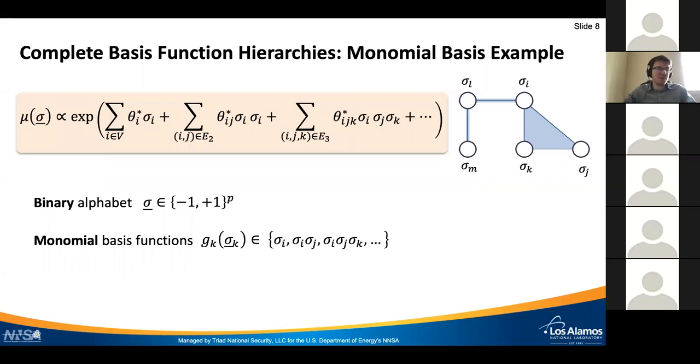For the sake of simplicity, let us work with binary variables which take values minus one and plus one. Typically, if we don't know what the distribution is, one approach would be to set a complete basis function hierarchy, which can be, for example, monomial basis functions which correspond to different interaction orders, very appealing in physics. Then we could try to model our distribution by progressively adding higher and higher orders.